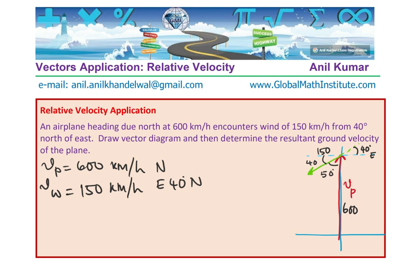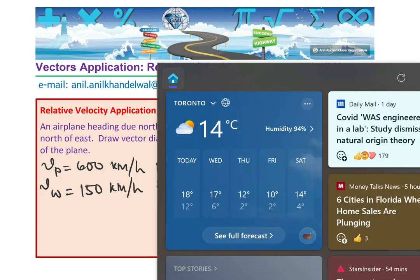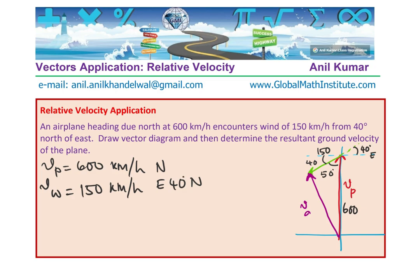And this angle here, between the two vectors is going to be 50, because north and east are at right angles. Make sense? Perfect. And we are calling this 600, and that will be 150. Resultant will therefore be from the original position to the end point. And that is actually velocity of plane from the ground.